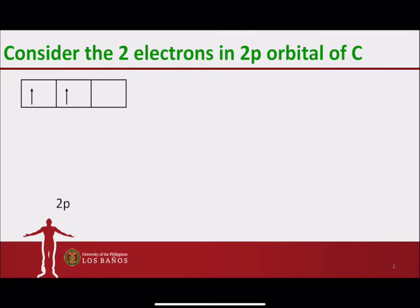One electron on the first 2p orbital, and another electron in the second 2p orbital. There are actually two possible ways to fill up the 2p orbitals, as illustrated in the diagram.